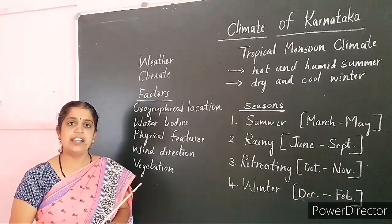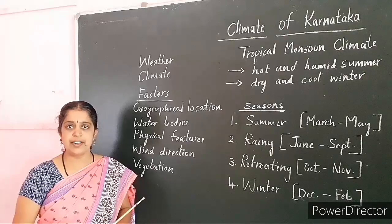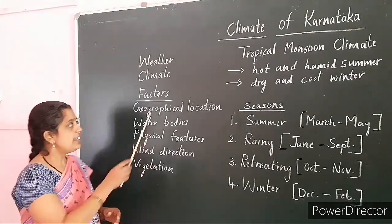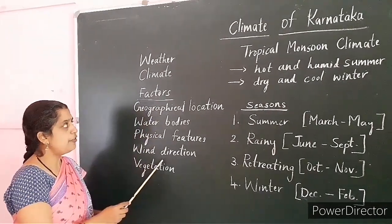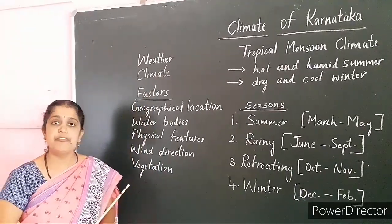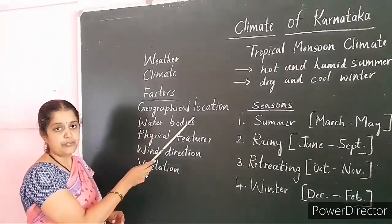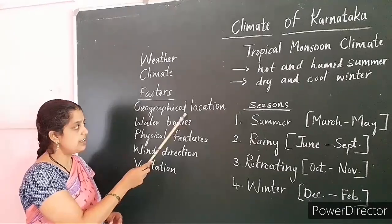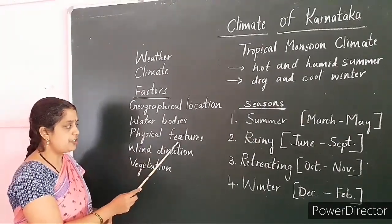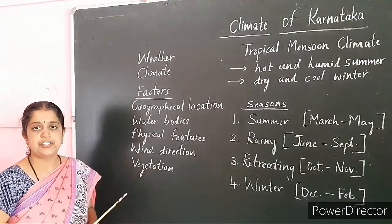The climate of any area is influenced by certain factors. There are five factors which influence the climate of any region: geographical location, proximity to water bodies, physical features, wind direction, and vegetation.